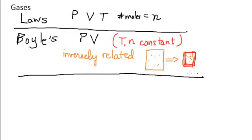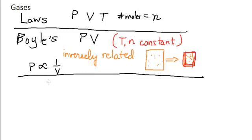Boyle's Law describes what happens to a sample of gas: when you change the pressure, the volume changes inversely. We can get a nice straight line by looking at the relationship between pressure and 1/V, because P is proportional to 1 divided by the volume. Next we're going to look at what's called Charles' Law.